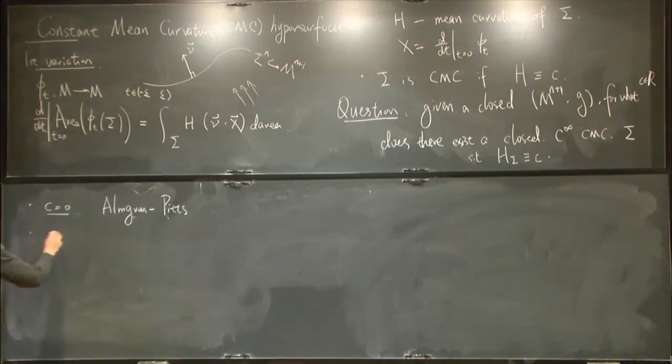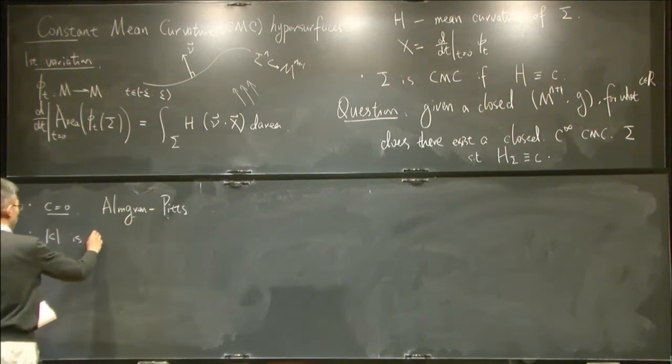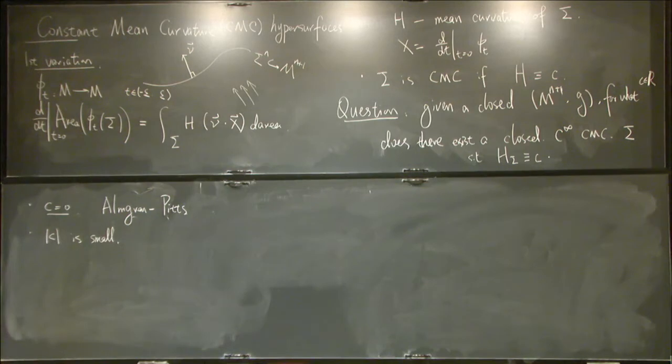So starting from the Almgren theory, we can think about the perturbation theory. Because if c is small. In the other case, you need some restrictions on your dimension. I just assume we are in lower dimensions, so don't think too much.